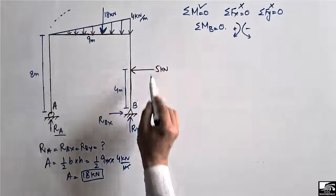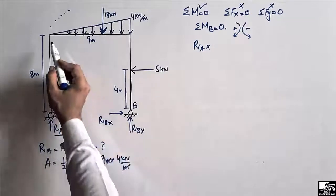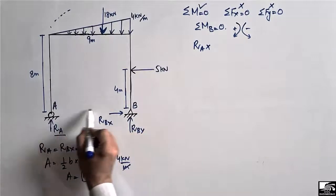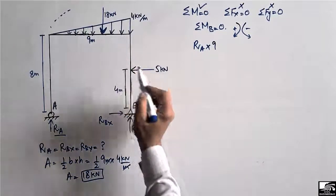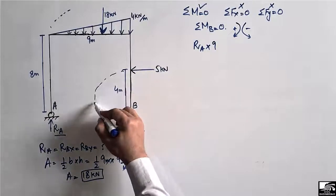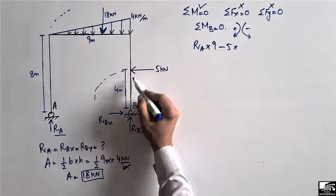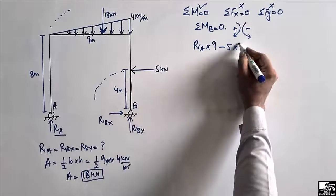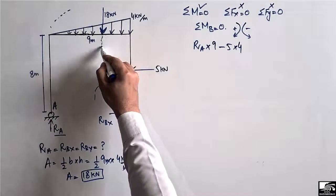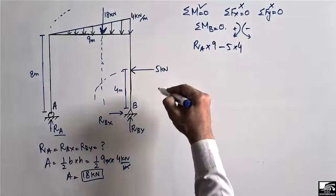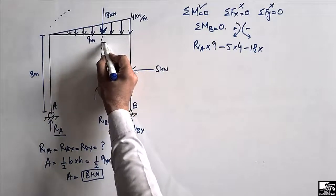Ra creates a clockwise moment about point B because it acts upward, so the term is Ra multiplied by the moment arm, which is the horizontal distance from A to B — 9 meters. The 5 kilonewton load creates an anti-clockwise moment about point B, so it is minus 5 times its moment arm of 4 meters. The 18 kilonewton load also creates an anti-clockwise moment, so it is minus 18 times its moment arm.